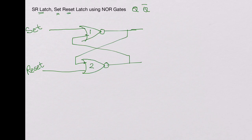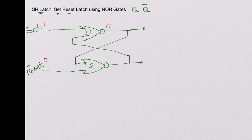Now we have to decide which output we call Q and which we call Q-bar. Let's determine that by placing logic values. Let's assume set is high and reset is low. Since set is high, this output will be low because of the NOR gate, and that low feeds back here. So we have two zeros at the input of the second NOR gate, giving a high at its output. So we call this Q and this Q-bar, because when set is high, Q is high.